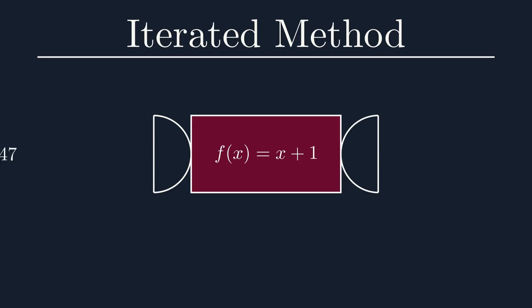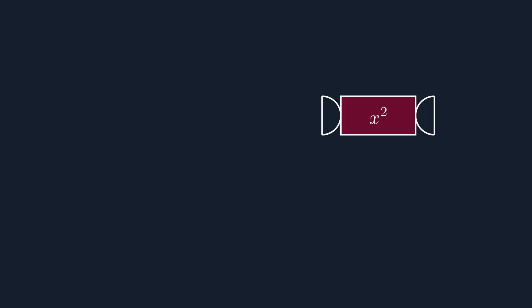This function isn't particularly interesting however, as it just goes off to infinity for any starting value. The function f of x equals x squared is a bit more interesting to investigate. As we know, if we square a number, it usually just gets larger. However, if the number is smaller than 1, it actually becomes smaller. And by repeating our squaring, it eventually becomes infinitely close to 0.